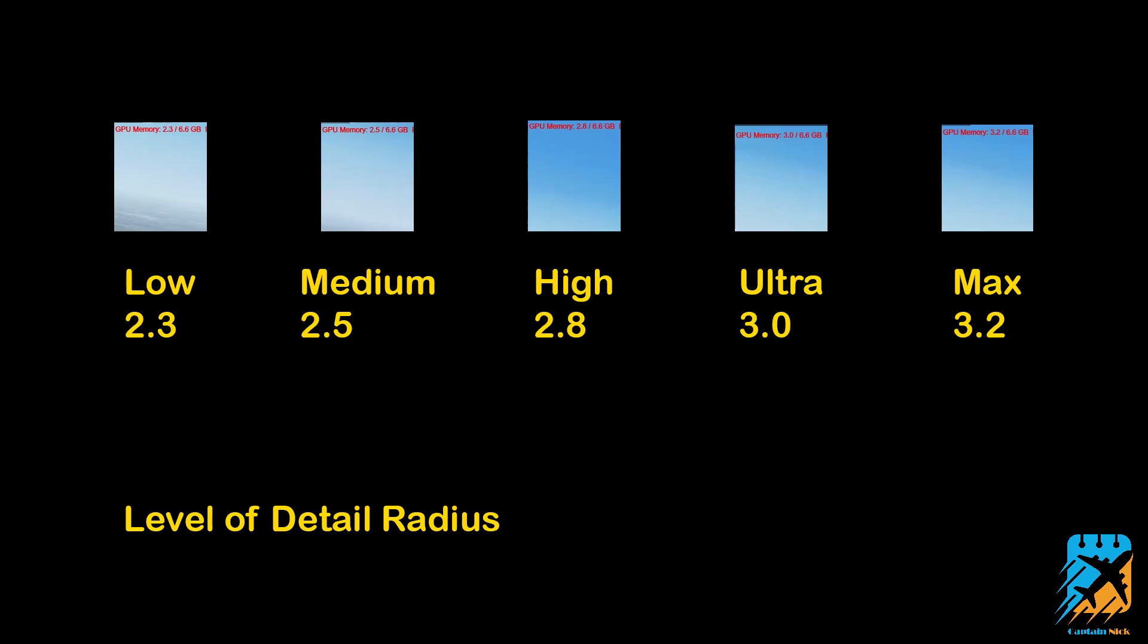Now when we move over to the global page on our settings, we're going to start on the left-hand side here at the top with level of detail radius. Once again, we revert back to the original settings and then I just dropped it down to low. As you can see here, there's a steady increase of VRAM usage as you bump it up from low at 2.3, medium 2.5, high 2.8, ultra 3.0, and then max at 3.2. You need to determine how far out you can comfortably see and display without taxing your computer. There's a pretty big difference here between low and max, and there's a pretty big difference in visual quality between low and max. Your mileage may vary.